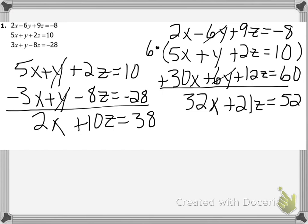Now I have two equations with the same two variables: 2x plus 10z equals 38, and 32x plus 21z equals 52. I need to solve this system for both variables. To eliminate x, I'll multiply the top equation by 16, because 2 goes into 32 evenly and that way x will have 32 in front of it in both equations.